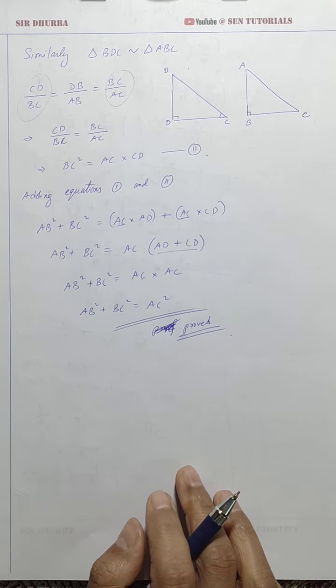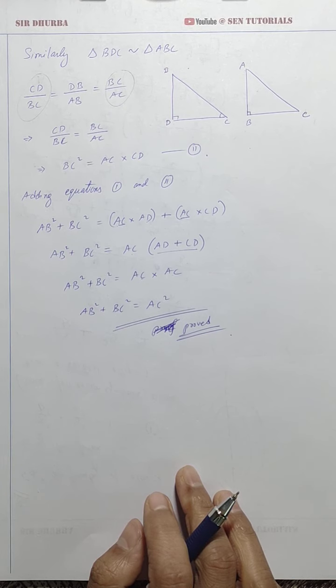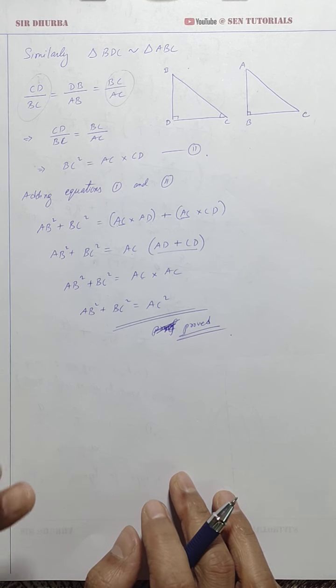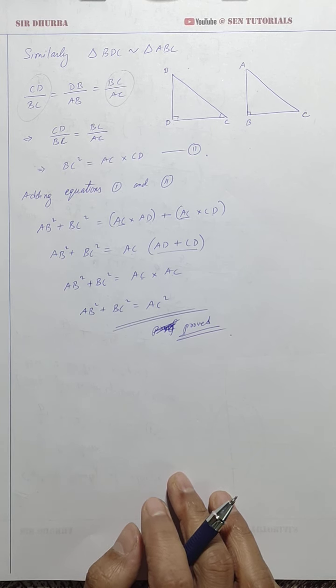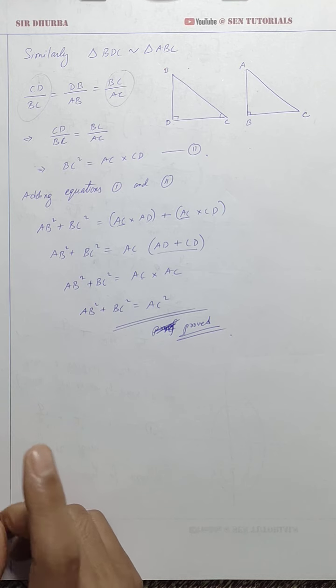All right. So, it can be as simple as that. Please, no need to memorize. Just do it two, three times. Go to the video once again and do it two, three times. It will be very easy for you. Okay. All right. Then, I'll see you in the next video with the converse of the Pythagoras theorem. Bye-bye.